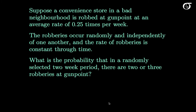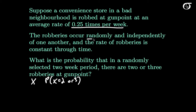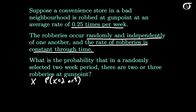Suppose a convenience store in a bad neighborhood is robbed at gunpoint at an average rate of 0.25 times per week. The robberies occur randomly and independently of one another, and the rate of robberies is constant through time. What is the probability that in a randomly selected 2-week period there are 2 or 3 robberies at gunpoint? Since robberies occur randomly, independently, and at a constant rate, this leads us to think about the Poisson distribution.